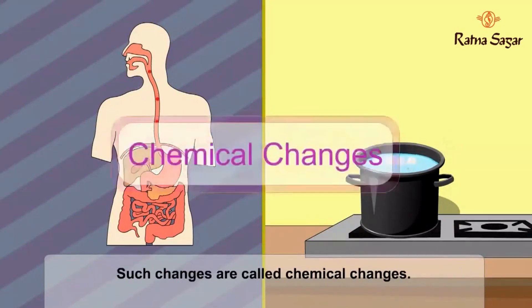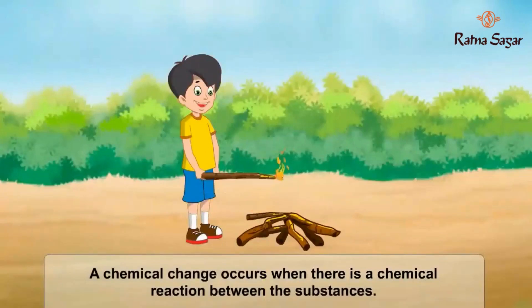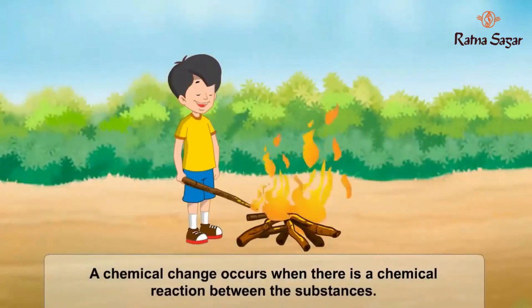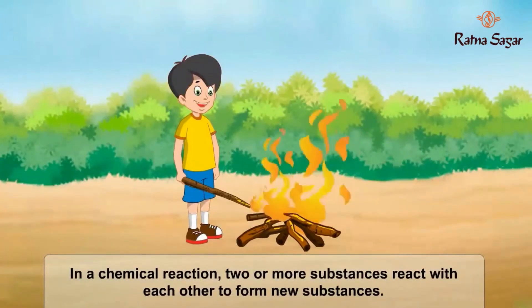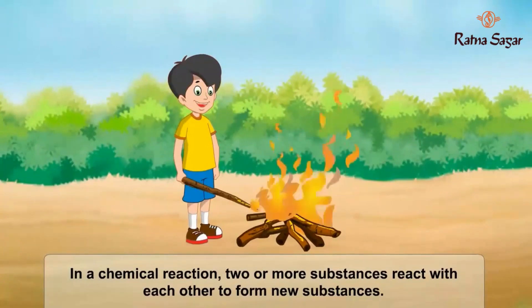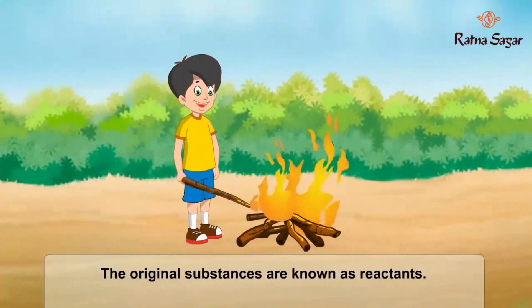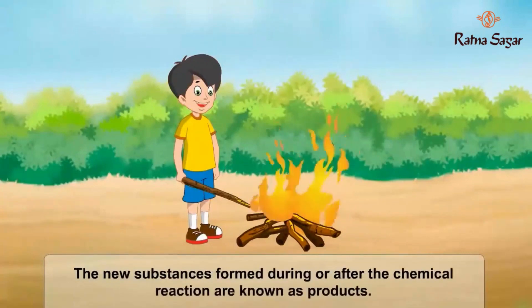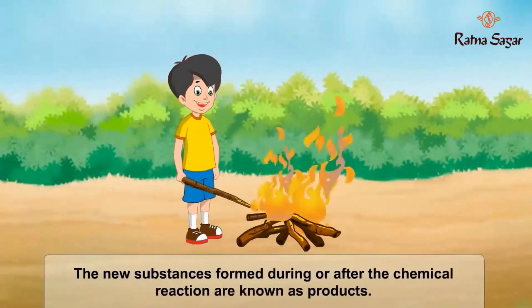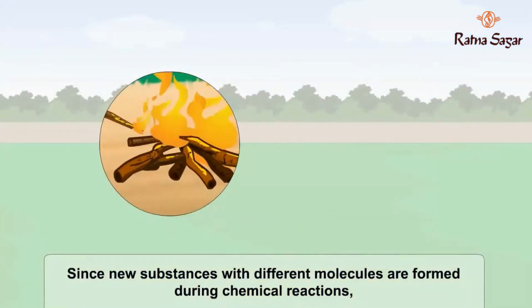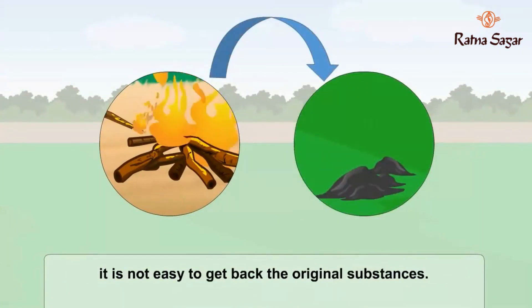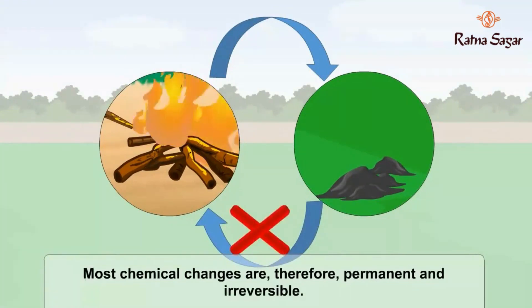Such changes are called chemical changes. A chemical change occurs when there is a chemical reaction between the substances. In a chemical reaction, two or more substances react with each other to form new substances. The original substances are known as reactants. The new substances formed during or after the chemical reaction are known as products. Since new substances with different molecules are formed during chemical reactions, it is not easy to get back the original substances. Most chemical changes are, therefore, permanent and irreversible.